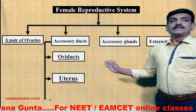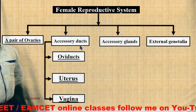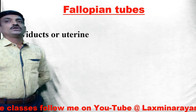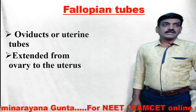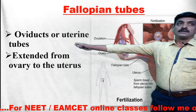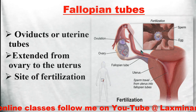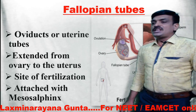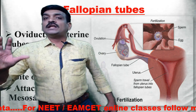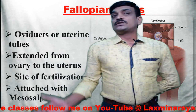Let us first discuss the oviducts. These oviducts are also called fallopian tubes or uterine tubes. They extend from the ovary to the uterus. You can clearly observe the fallopian tubes in the diagram. These fallopian tubes are the sites of fertilization. They are attached to the abdominal cavity with a peritoneal layer called the mesosalpinx.